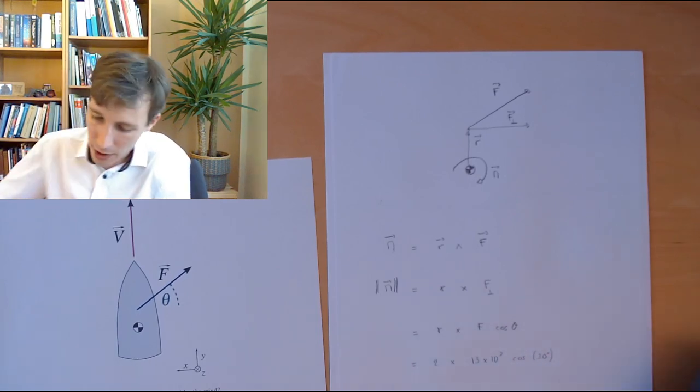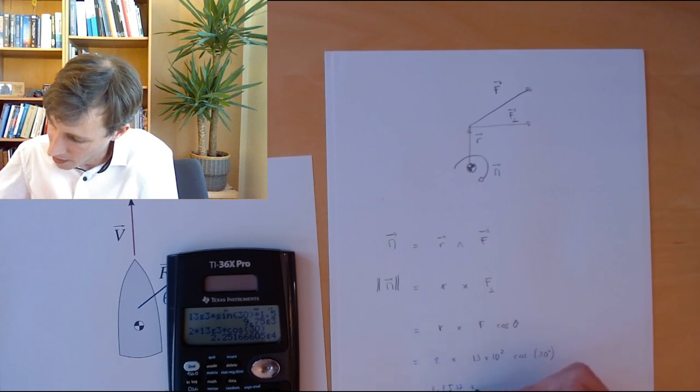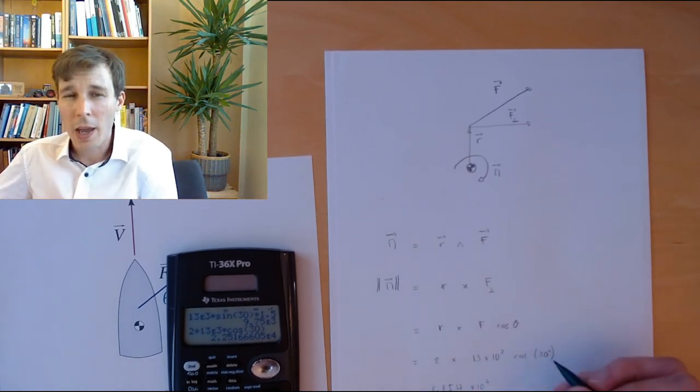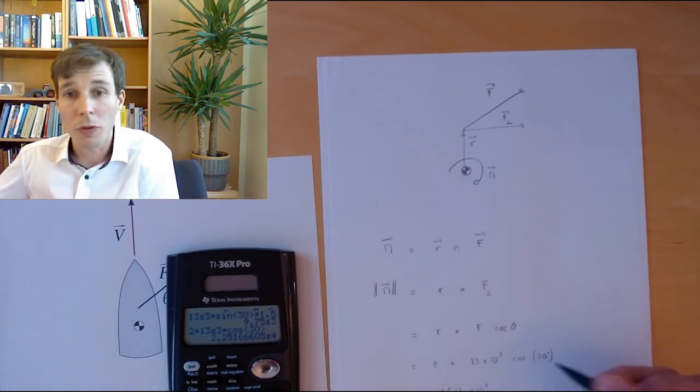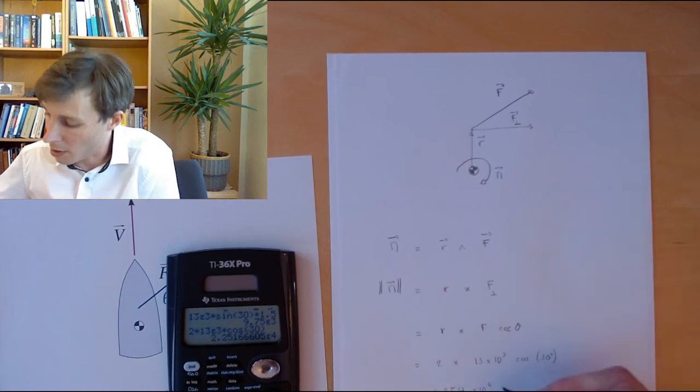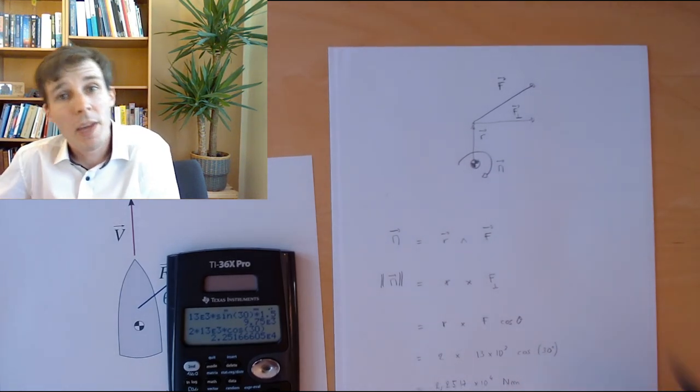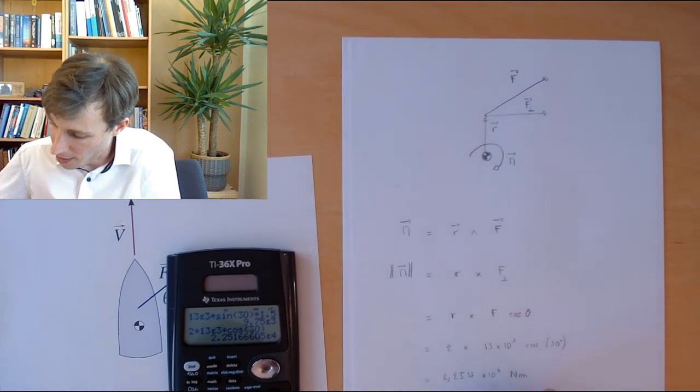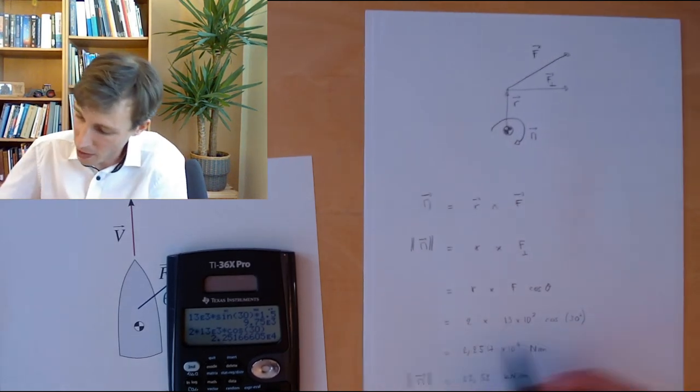If you type this into your calculator, like I did before, you will get 2.25 times 10 to the power of 4. And what is the unit of a moment? It is a force at the end of a length. So newtons at the end of meters, newton meters. And again, in engineering, we like newton meters, kilonewton meters, mega newton meters, and so on. So 22.52 kilonewton meters. And this is the length, the length of the vector m.